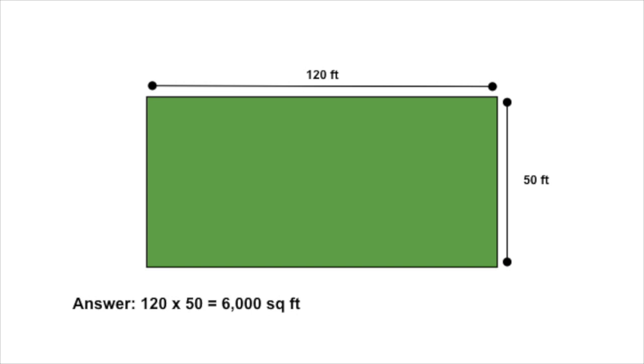Did you get your answer? You should have come up with 6,000 square feet. You just multiply 50 by 120 to get 6,000. If you didn't get that, maybe try your math again and see where you might have gone wrong or made a mistake. If you still didn't get it, maybe start the video over again to ensure that you're fully understanding the concepts. It's important that you have this part down before we move on.